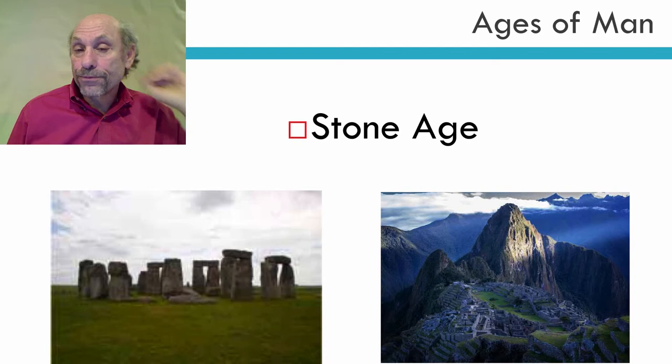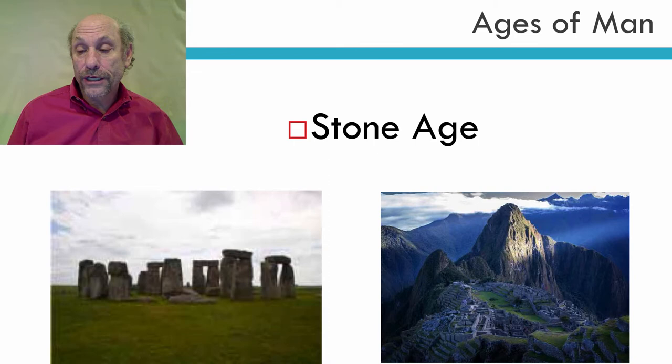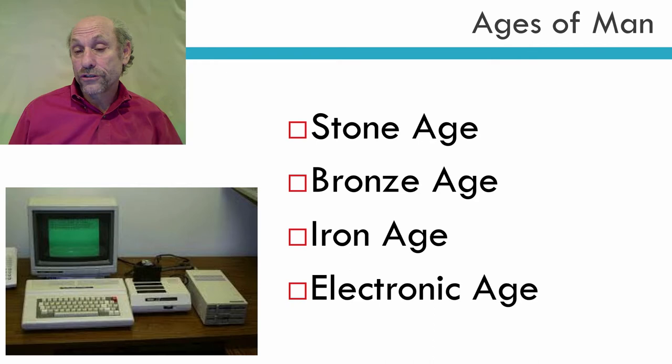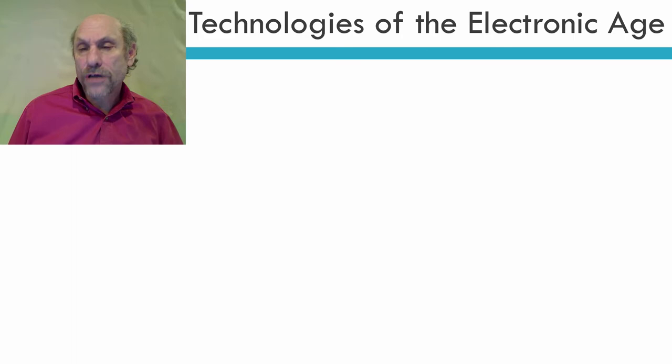Now, these four information ages — cave painting, printing on parchment or paper, the printing press, and the electronic age — roughly correspond to the four ages of man: the stone age (I have pictures here of Stonehenge and Machu Picchu, which were stone age buildings), then the bronze age, then the iron age, and finally the electronic age. So they roughly correspond to these four ages of man.